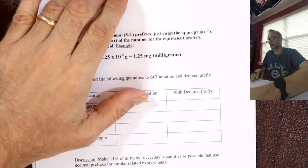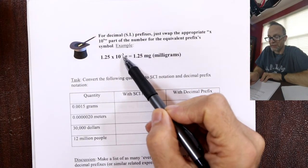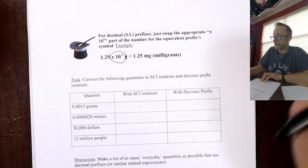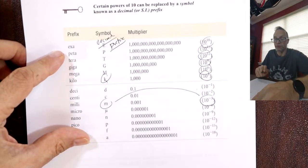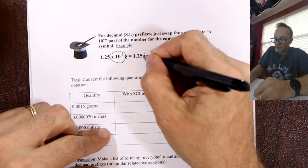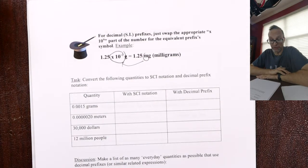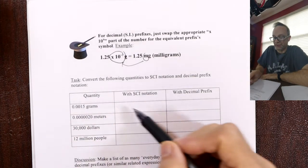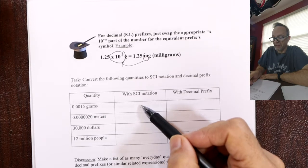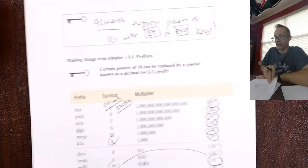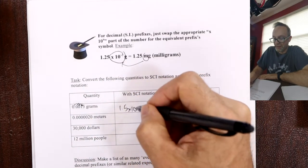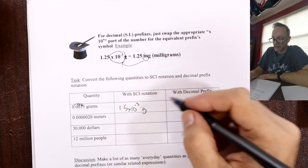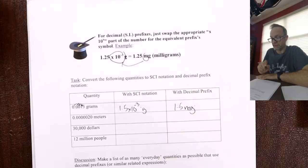Here's an example: 1.25 times 10 to the minus 3 grams. Looking at the list, 10 to the minus 3 is milli. So swap milli for 10 to the minus 3 — 1.25 milligrams. For the first practice example: 3 jumps, 1.5 times 10 to the minus 3 grams is 1.5 milligrams.